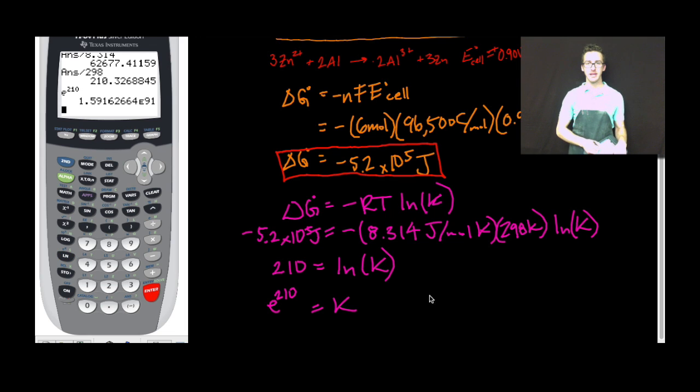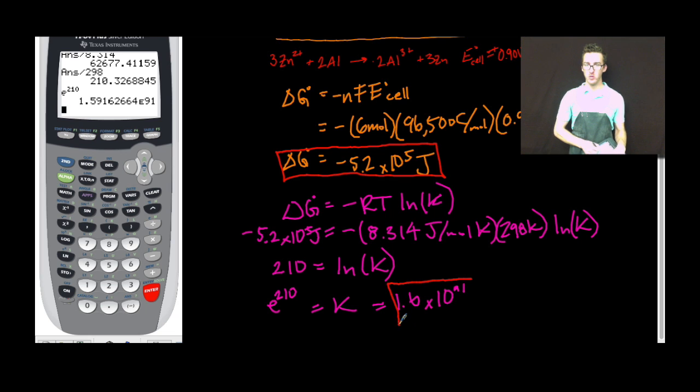Woo! Our equilibrium constant is really large here. We get 1.6 times 10 to the 91. No units with our equilibrium constant. Boom. We are done.